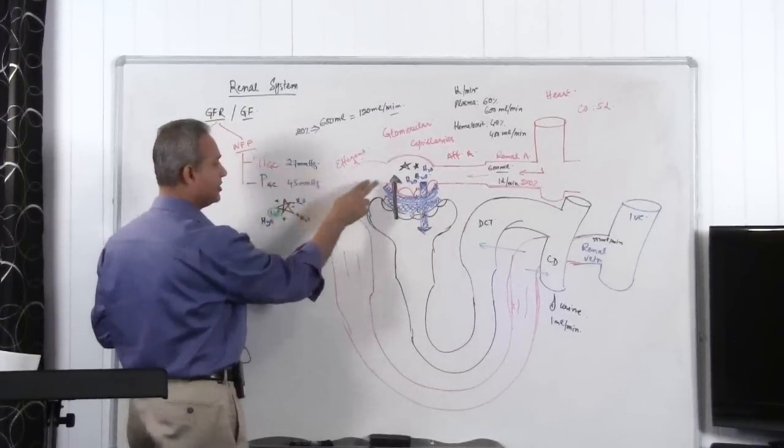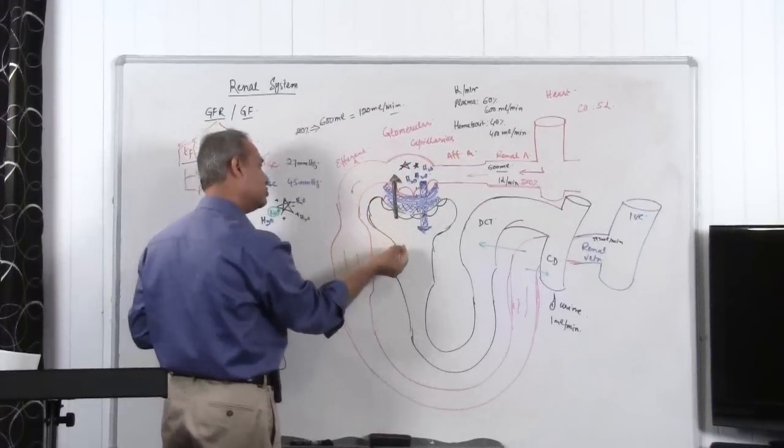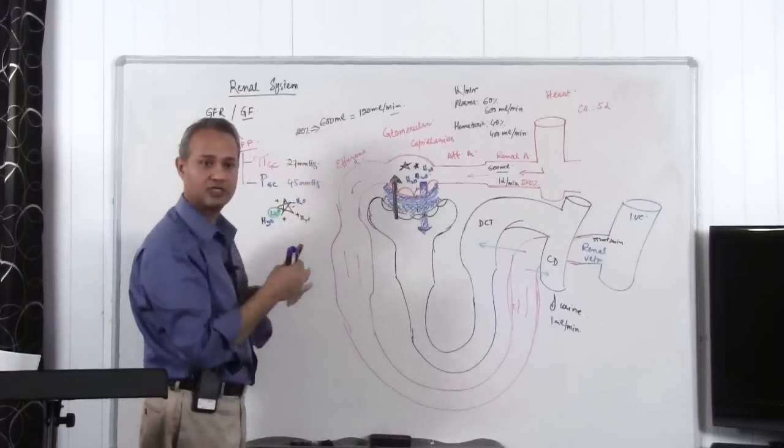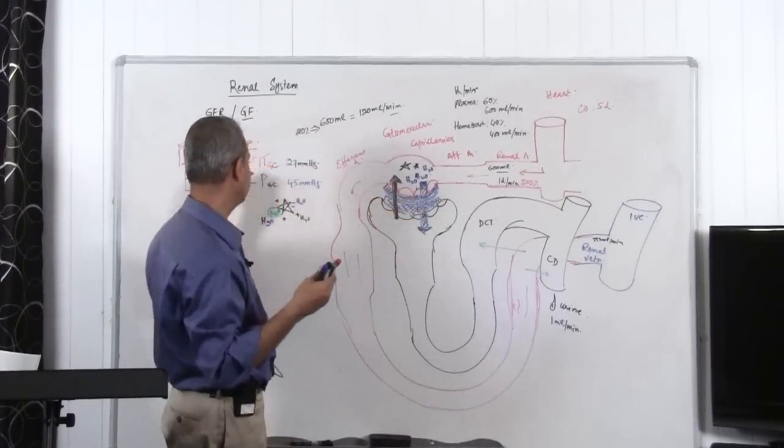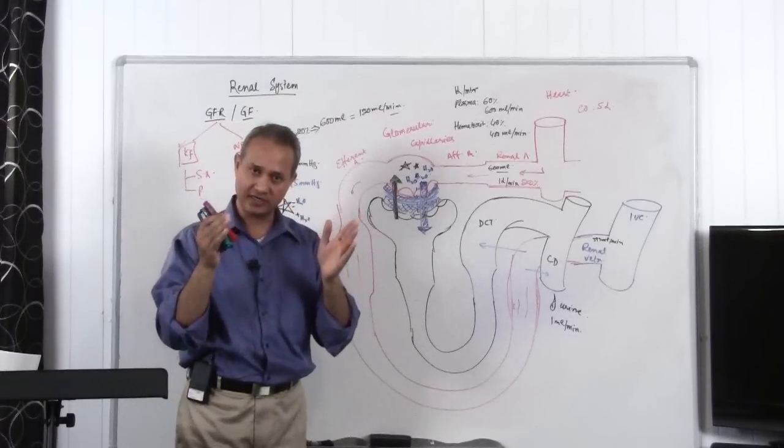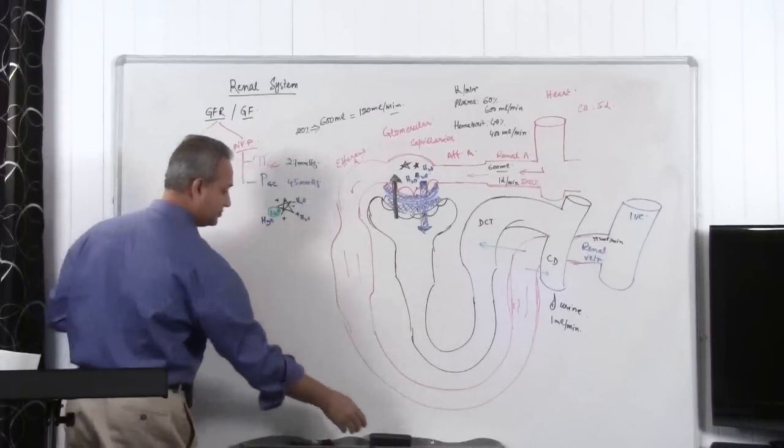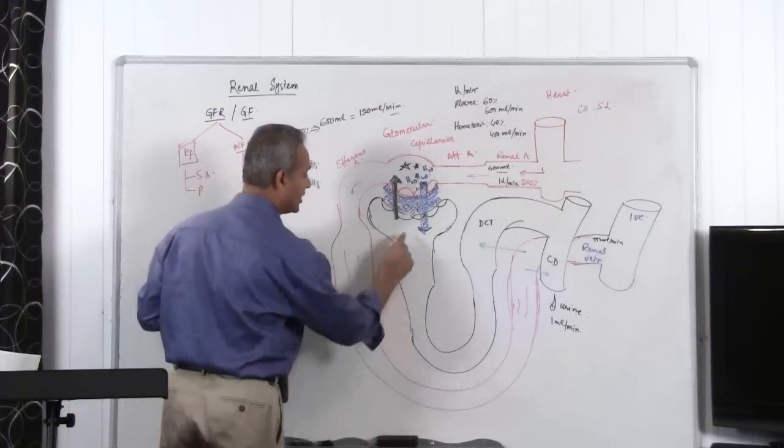Then there is 27 millimeters of mercury, the pressure which is trying to move the fluid back. So shouldn't these be subtracted to understand what is the net filtration pressure? Yes. So basically, what you would do is you'll pick up 45 and you'll subtract 27. But we're not finished here. This is not it. There are two more forces. Remember, we talked about there are four forces here.